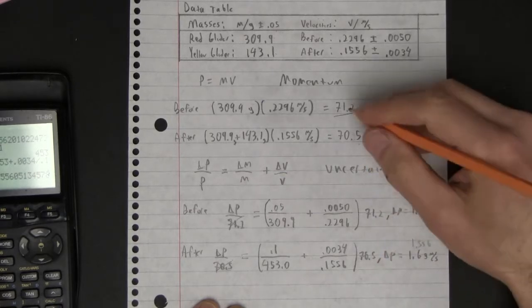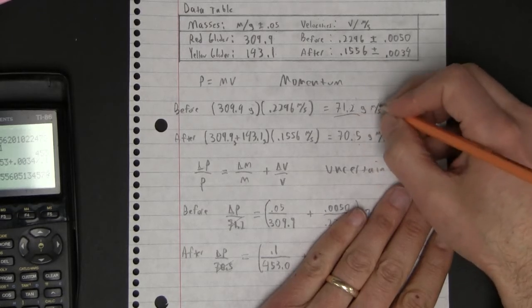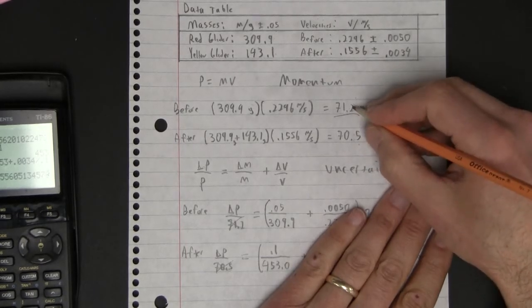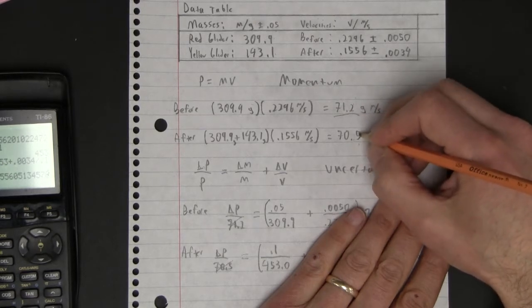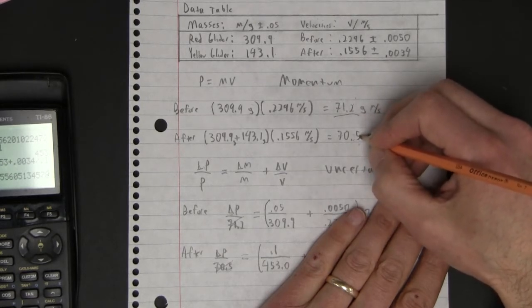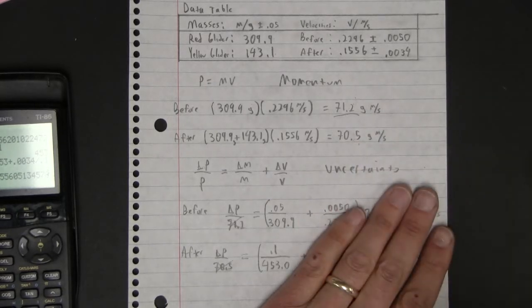Now, if there was an uncertainty, if you just look at these numbers, say the uncertainty is a tenth of a gram meter per second, then the lowest that could be is 71.1, and the highest that could be is 70.6. So they definitely couldn't be the same number then, and so we would then question conservation momentum.